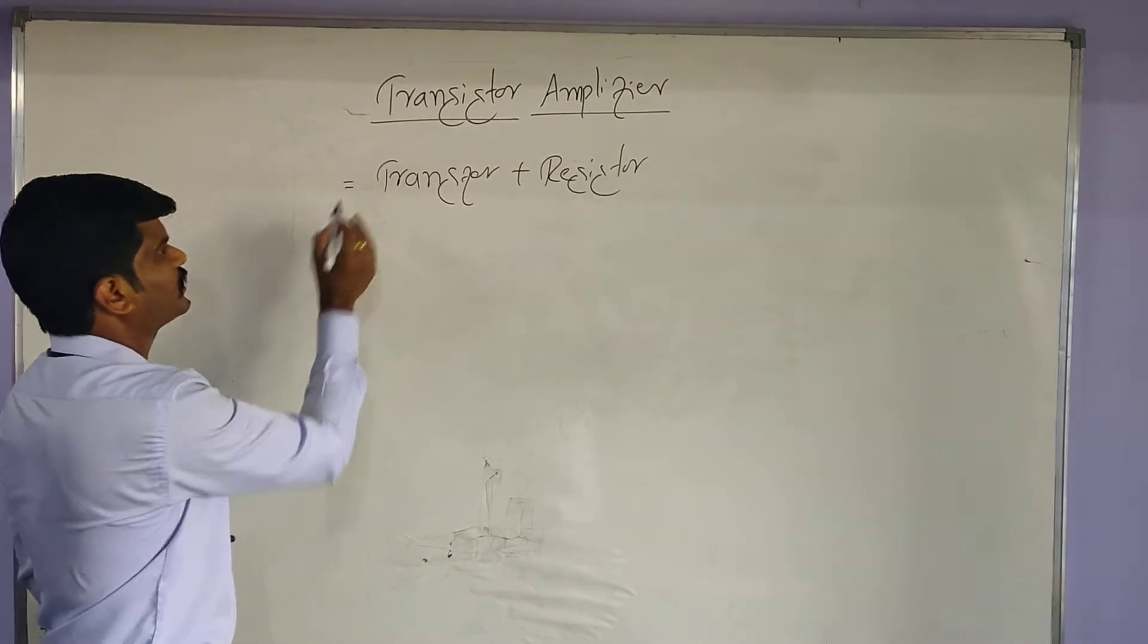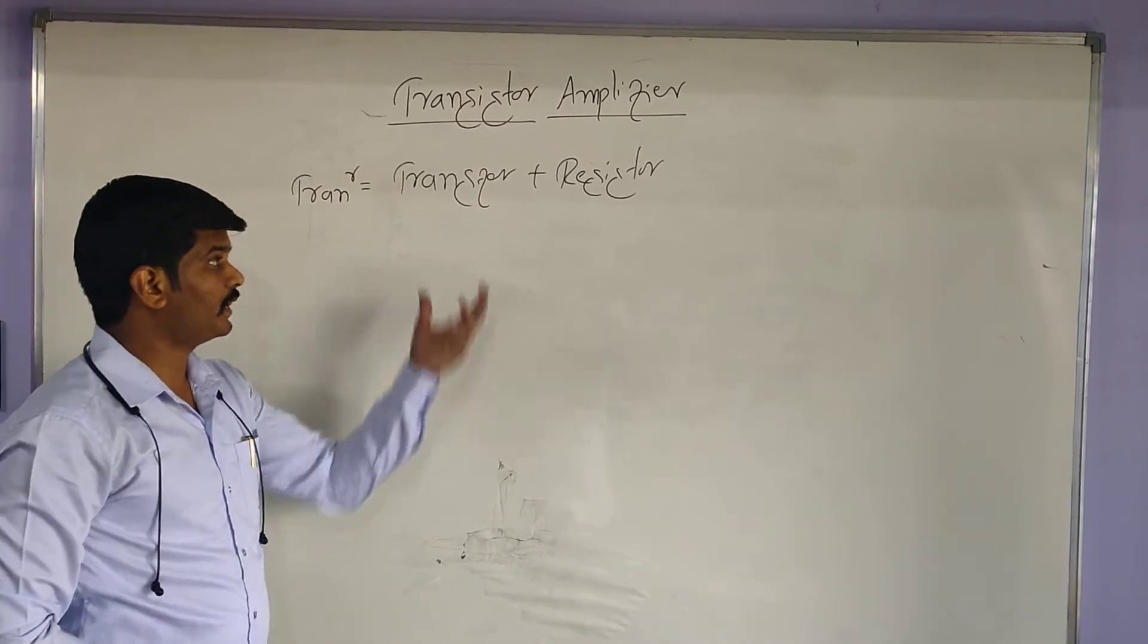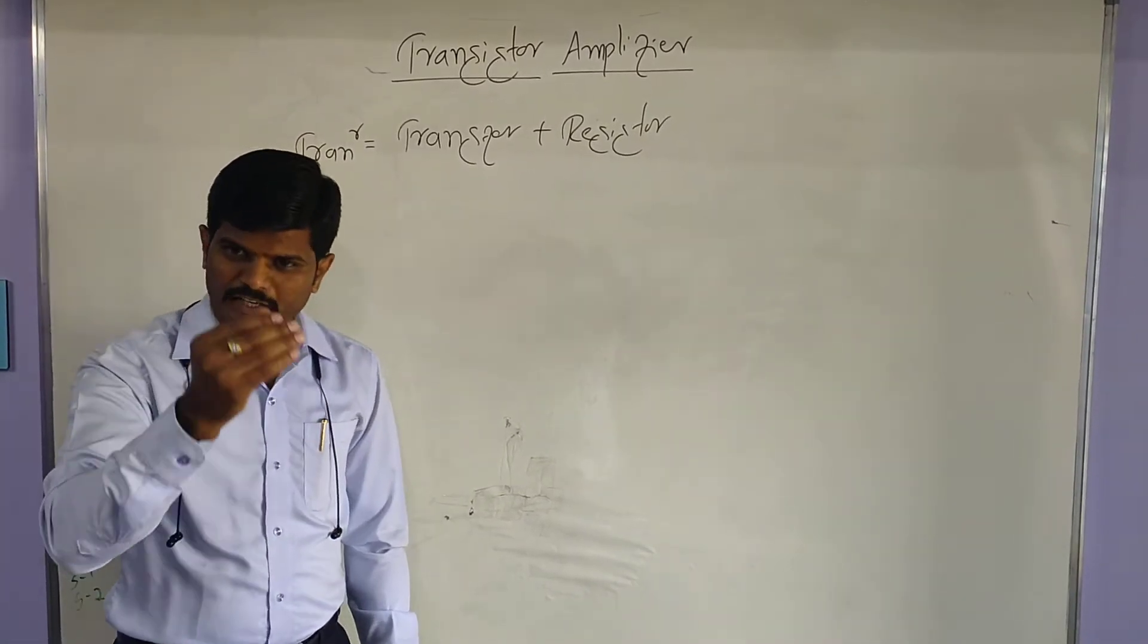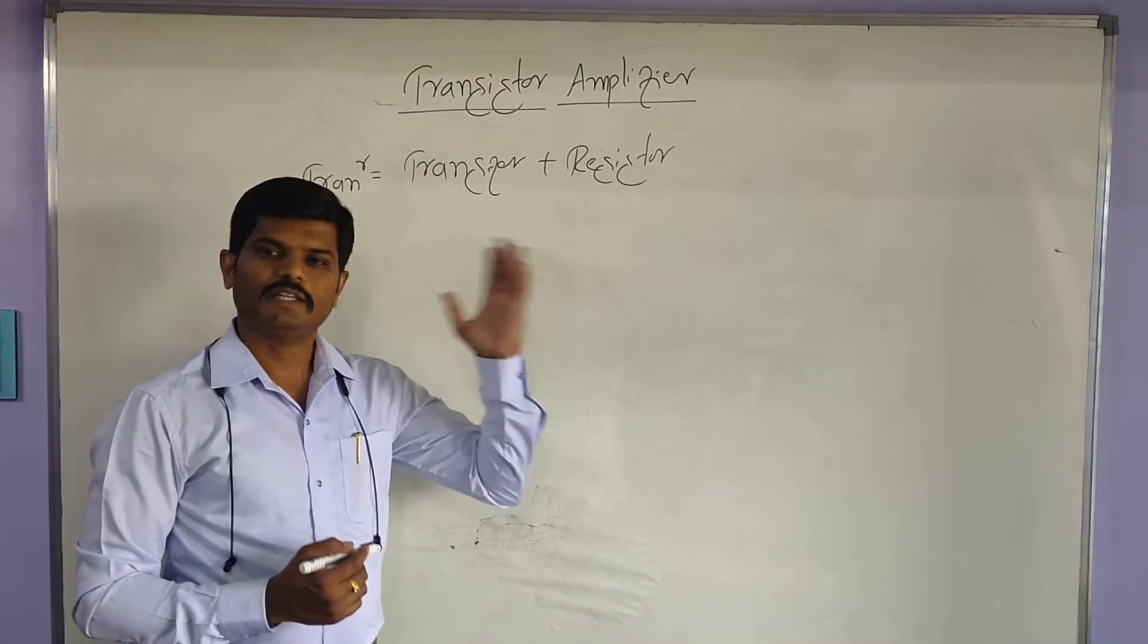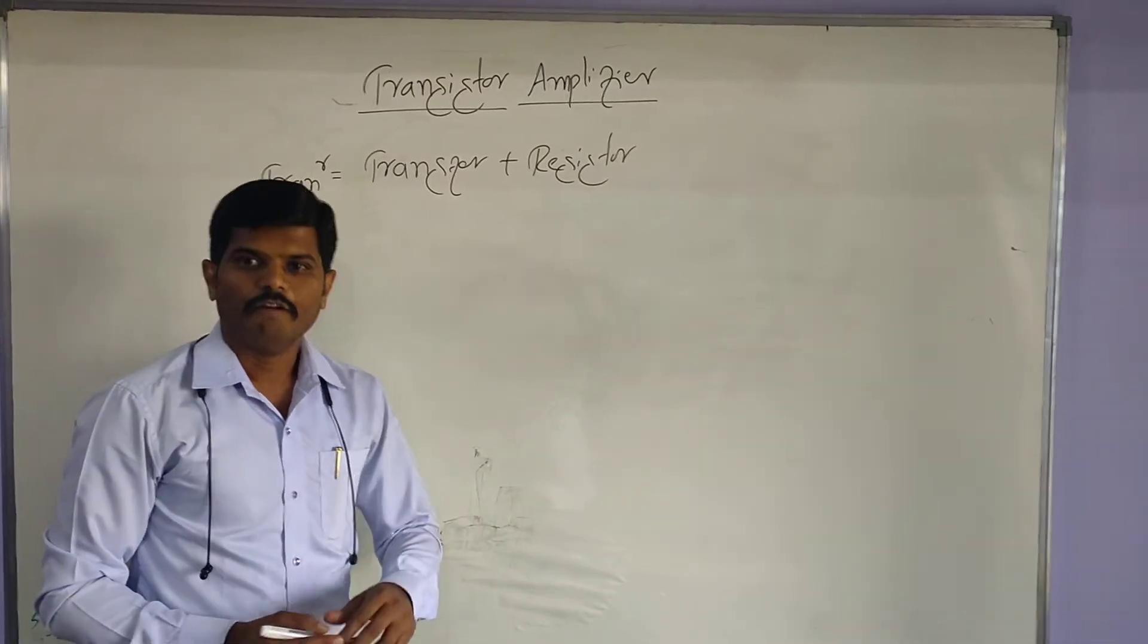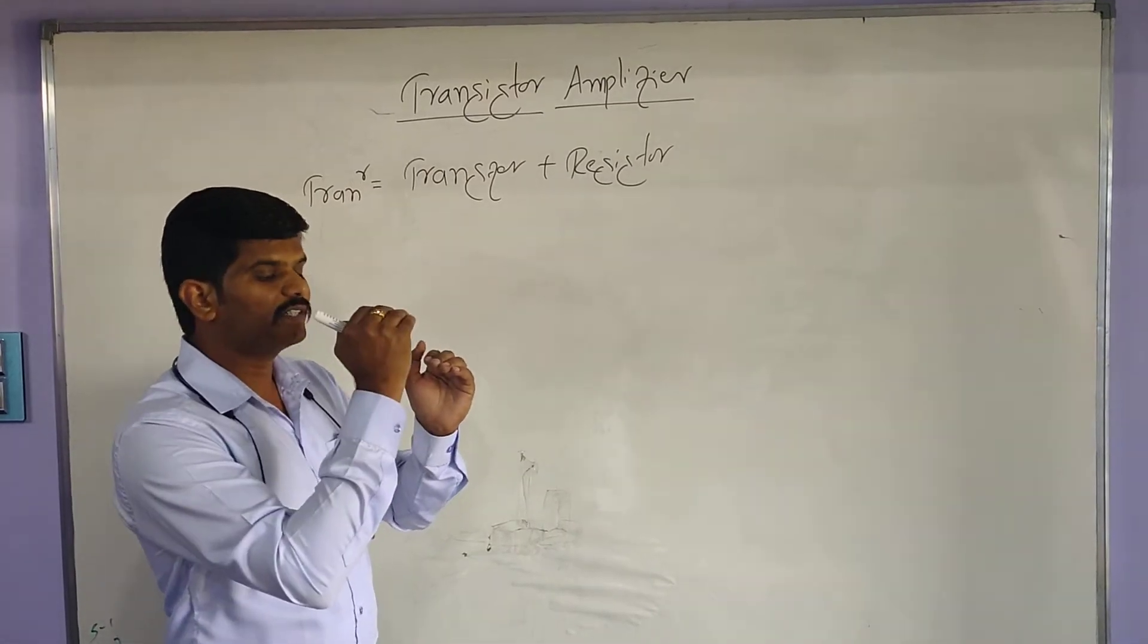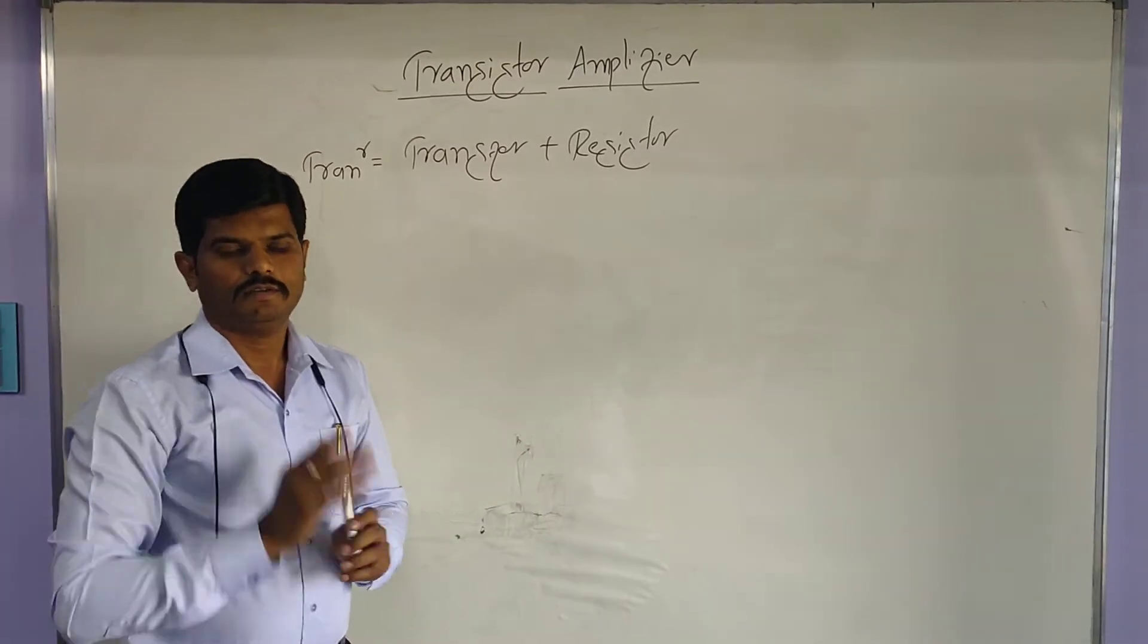What is a transfer resistor? Which transfers the signal either by means of current or voltage. What do you mean by signal then? Signal, it is a time-varying quantity which represents the information, that is known as signal.